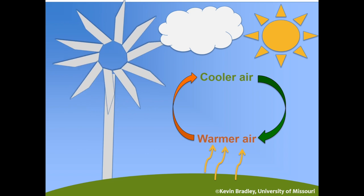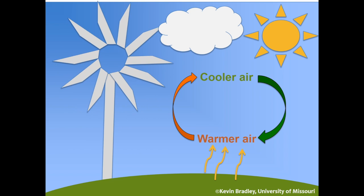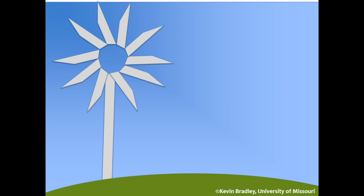When an inversion begins to set in, it's typically close to sunset or shortly after, and the sun is no longer emitting energy to the earth, so the earth begins to cool. If it's a clear night, any heat left in the earth's atmosphere is going to escape into space. Without cool and warm air mixing, there's no wind movement, and the cooler air settles near the earth's surface with the warmer air above it.